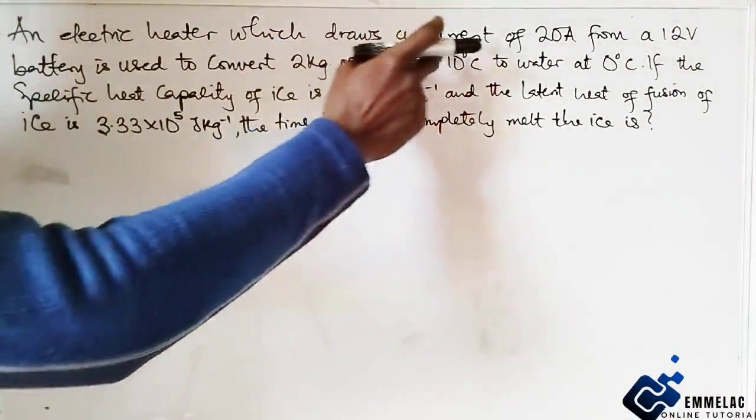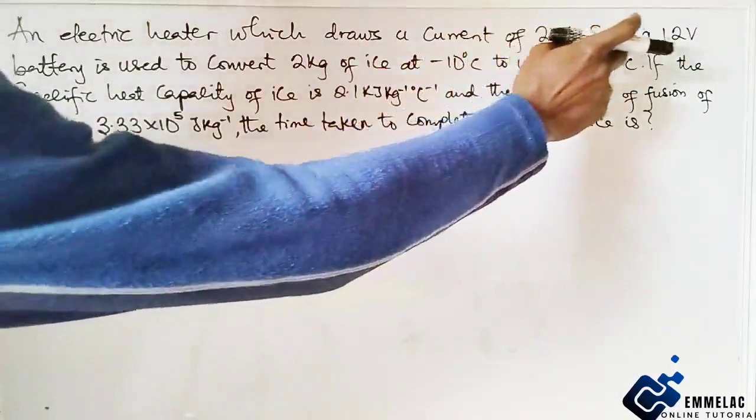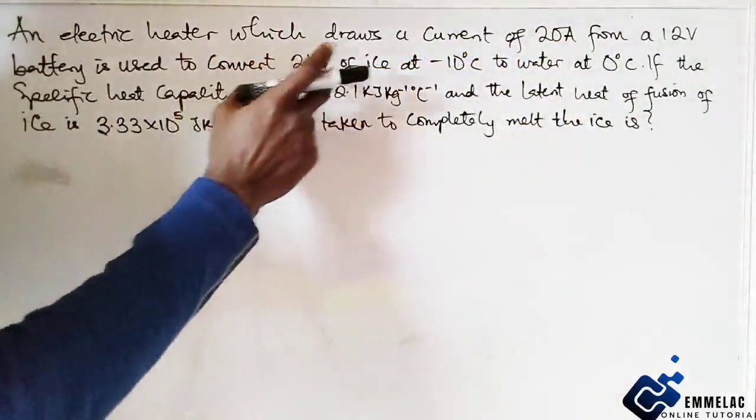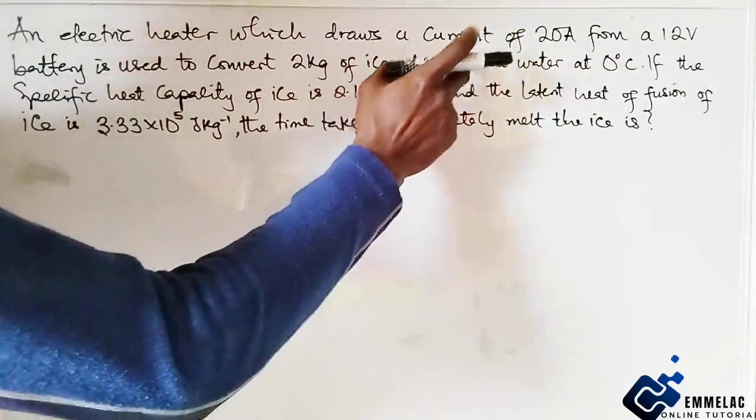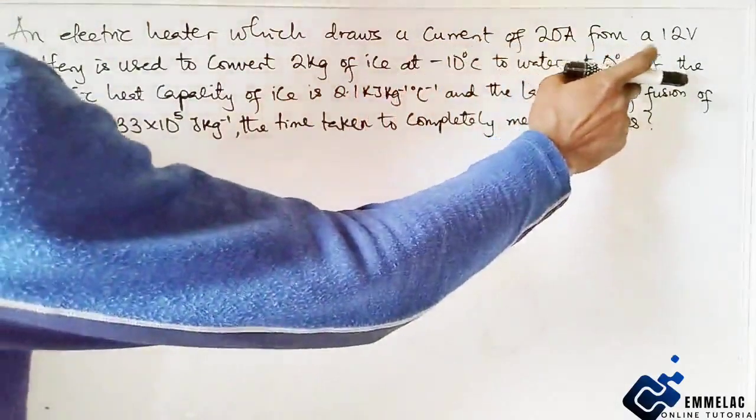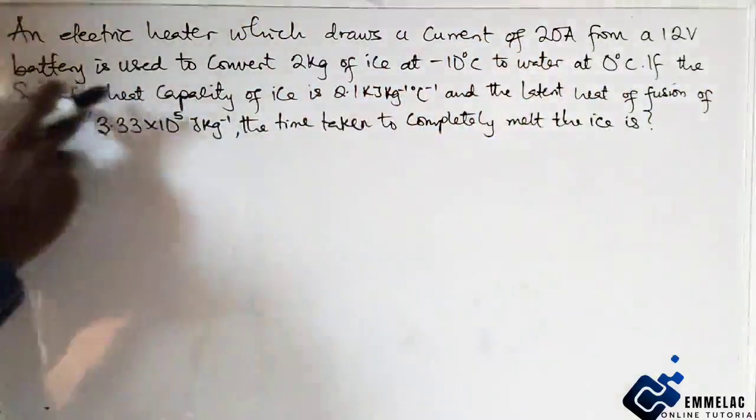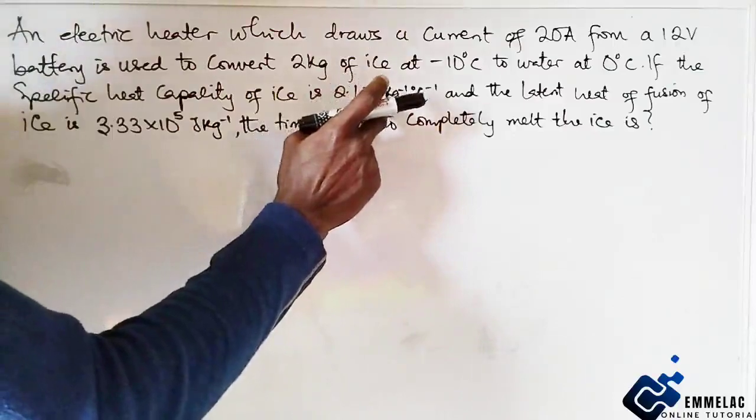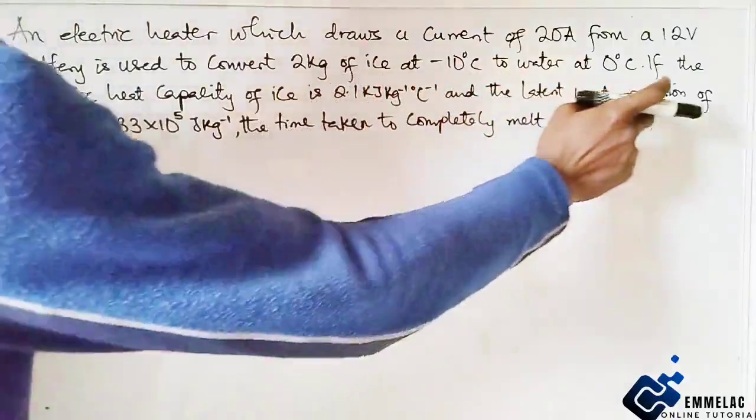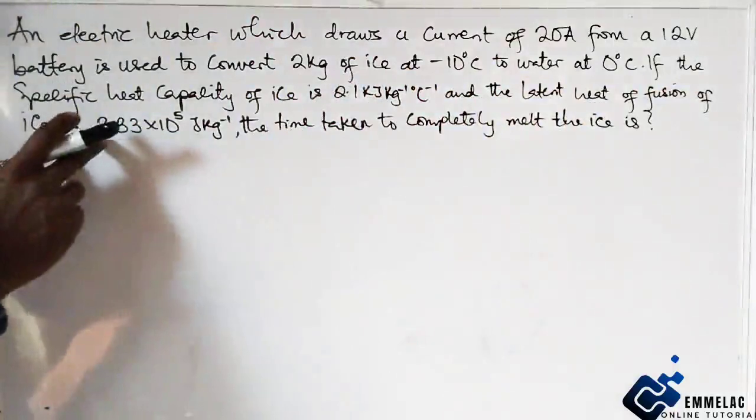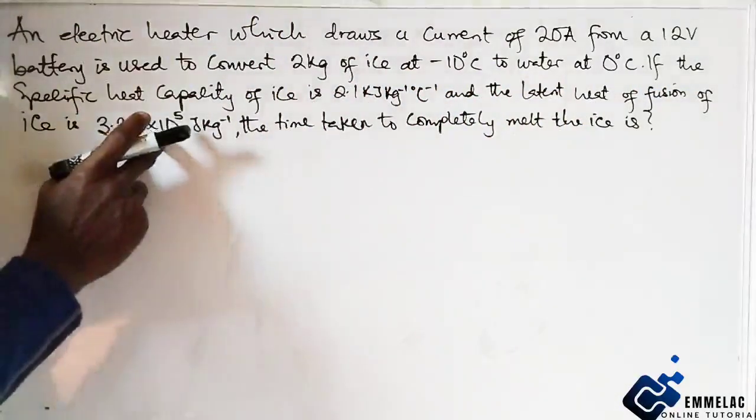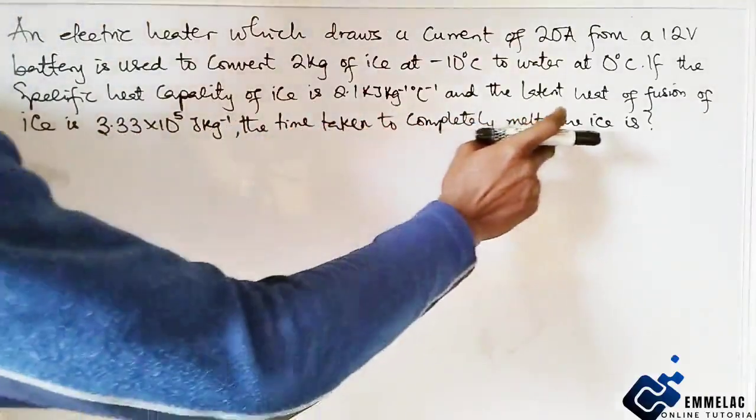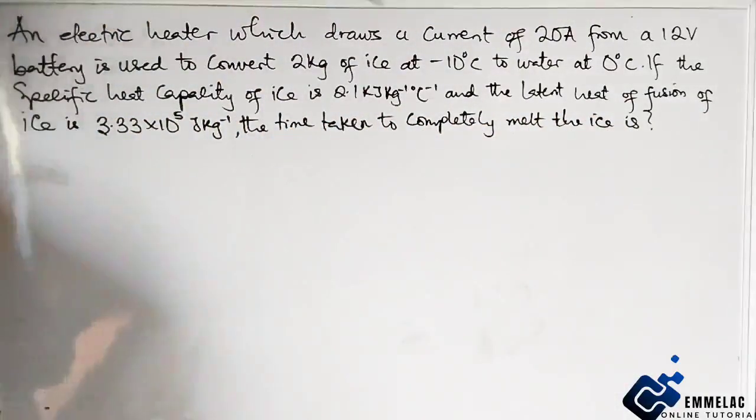An electrical heater which draws a current of 20 amperes from a 12 volt battery is used to convert 2 kg of ice at minus 10 degrees Celsius to water at 0 degrees Celsius. If the specific heat capacity of ice is 2.1 kilojoules per kilogram per degree Celsius and the latent heat of fusion of ice is 3.33 times 10 to the power 5 joules per kilogram, the time taken to completely melt the ice is...